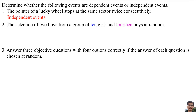Number 2. The selection of 2 boys from a group of 10 girls and 14 boys at random. The probability of selecting the first boy affects the probability of selecting the second boy. So they are dependent events.